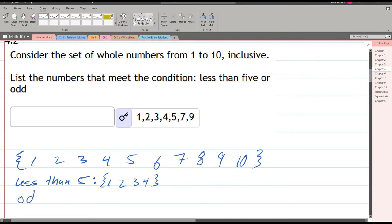Now, odd. So we have all the odd numbers: 1, 3, 5, 7, 9.